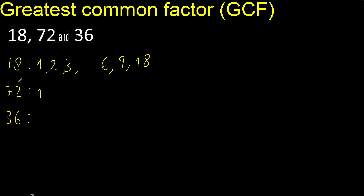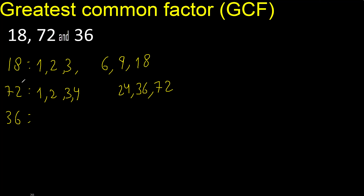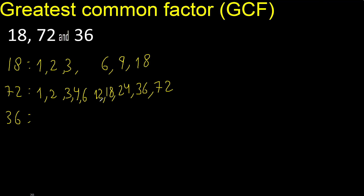Factors: divided by 1, divided by 2, divided by 3, divided by 4. Cannot be divided by 5. Divided by 6 — 12.